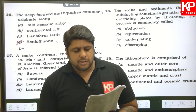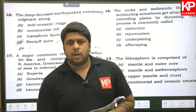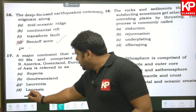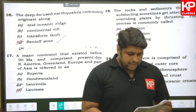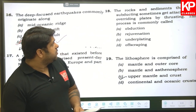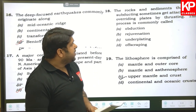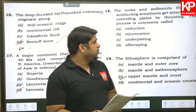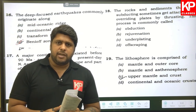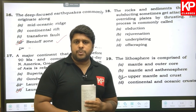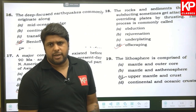Question seventeen: a major continent that existed before 90 million years ago, comprising present-day North America, Greenland, Europe, and part of Asia, is termed Laurasia. So D is the right answer. Question eighteen: rocks and sediments that were subducting and get attached to the overriding plate by thrusting — this process is commonly called offscraping.